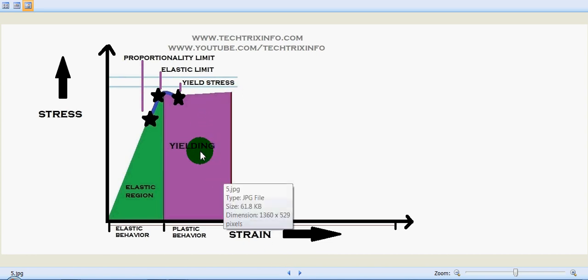This is the yielding stress. That means beyond this limit, the body, even though we remove the load, that deformation which has happened will be retained with the body. The body cannot come back to the original shape. It will keep some of its deformation at this point.